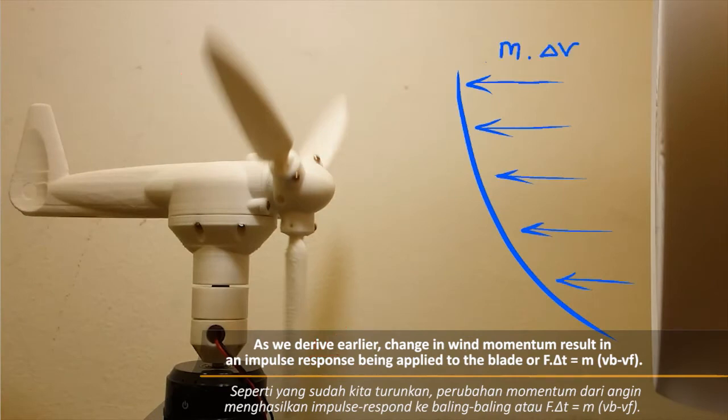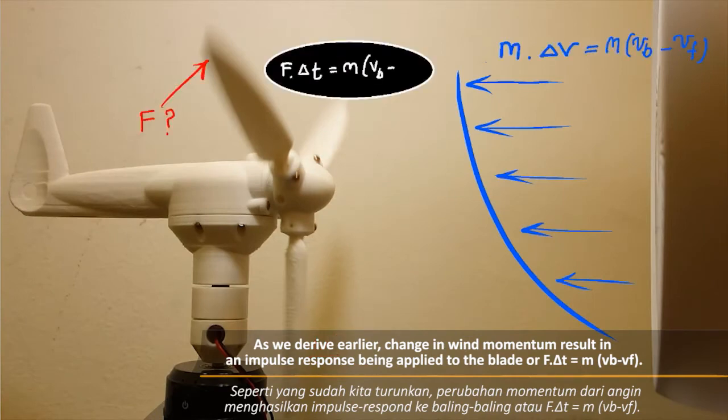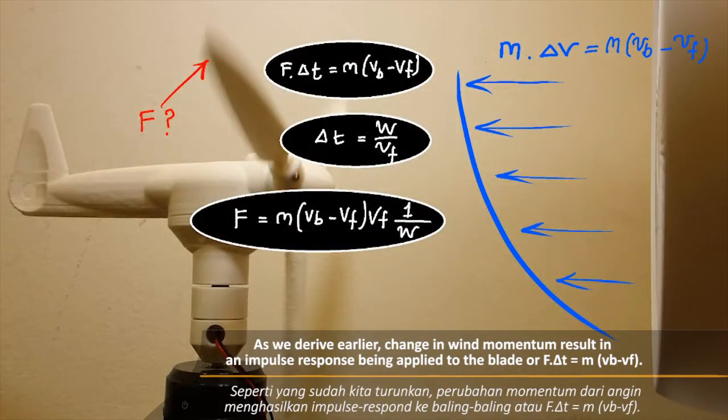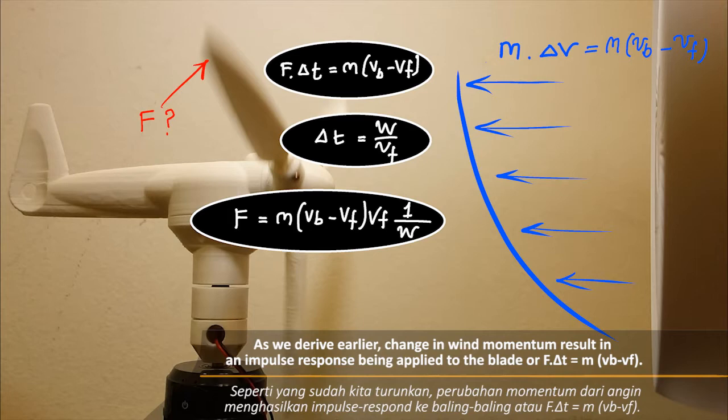As we derived earlier, change in wind momentum results in an impulse response being applied to the blade. Or, f times delta t equals m times vb minus vf.